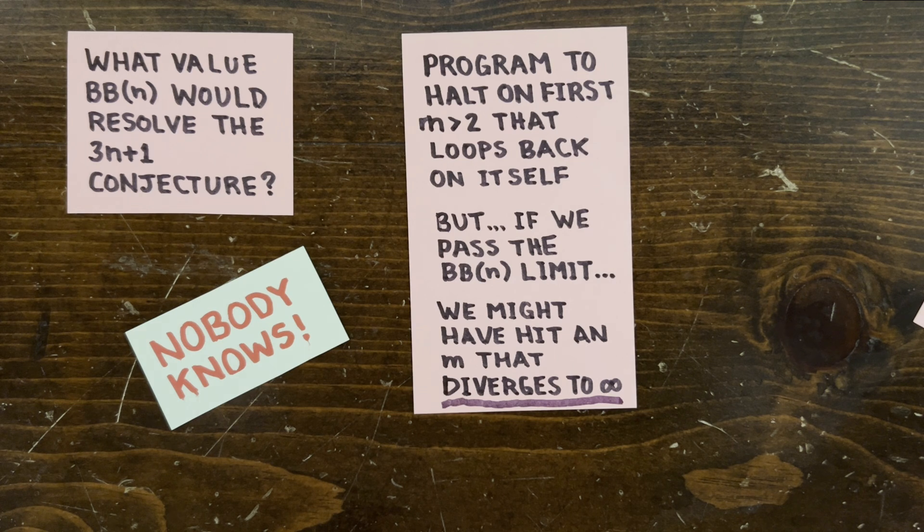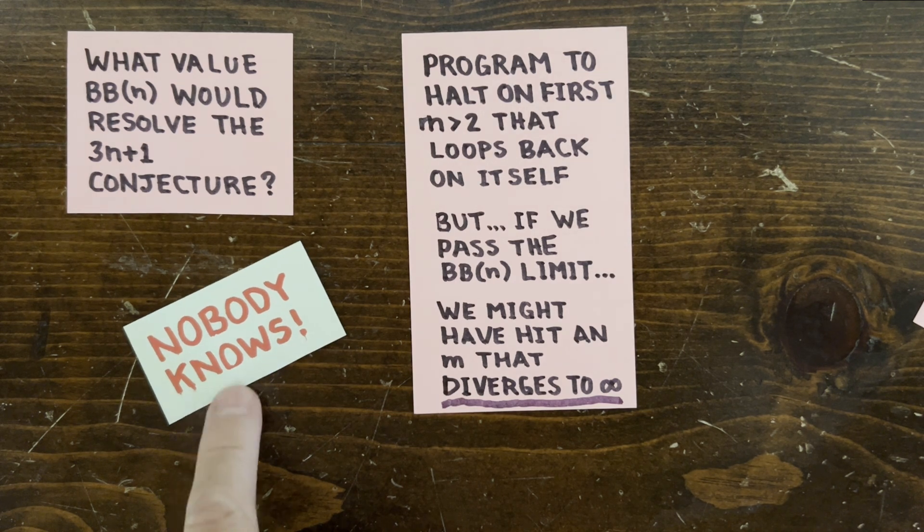Could there be some other program that stops, if and only if the 3n plus 1 conjecture is false? Nobody knows.